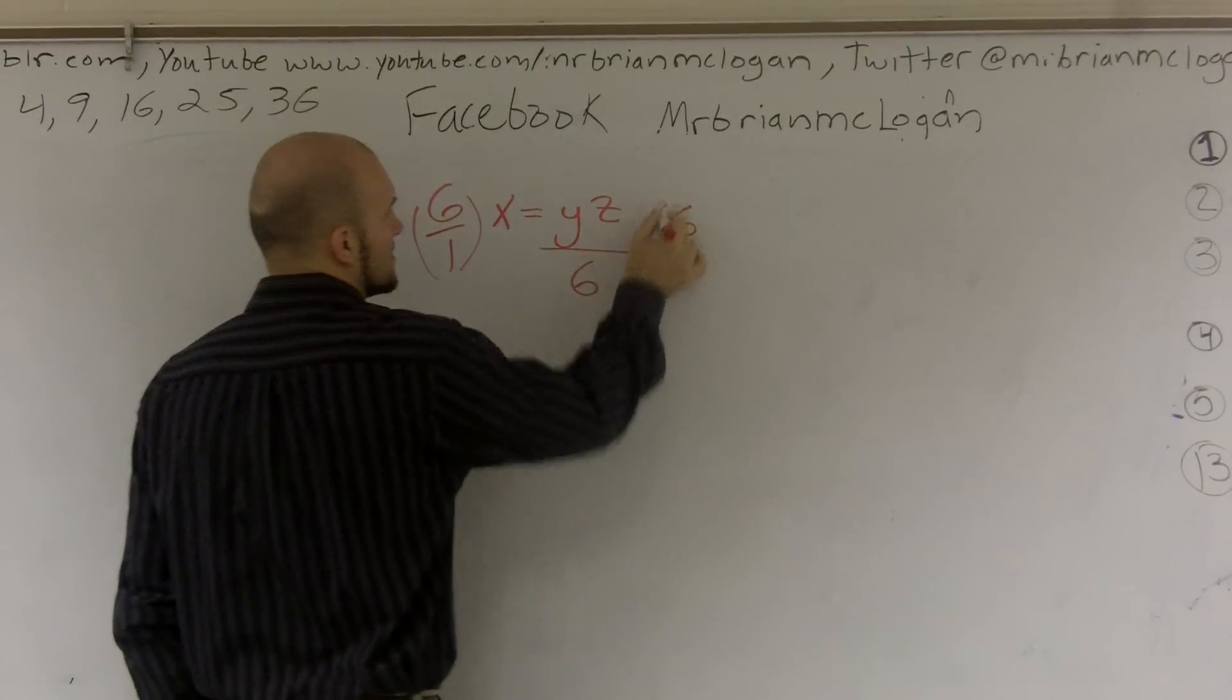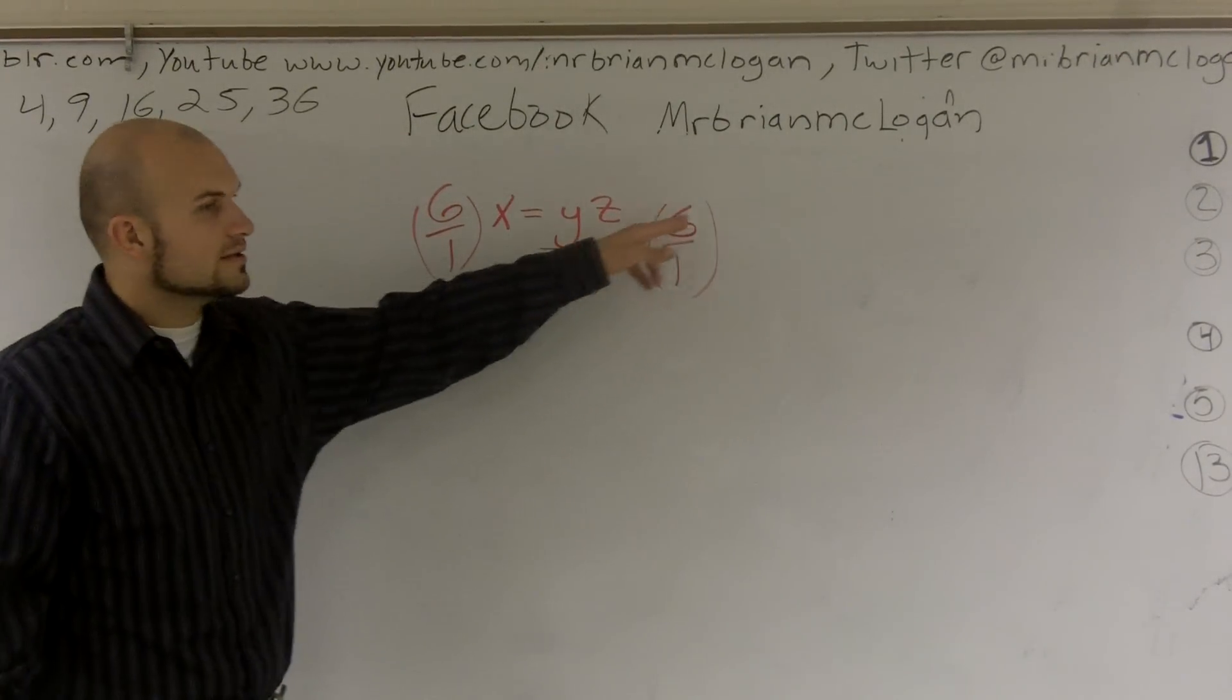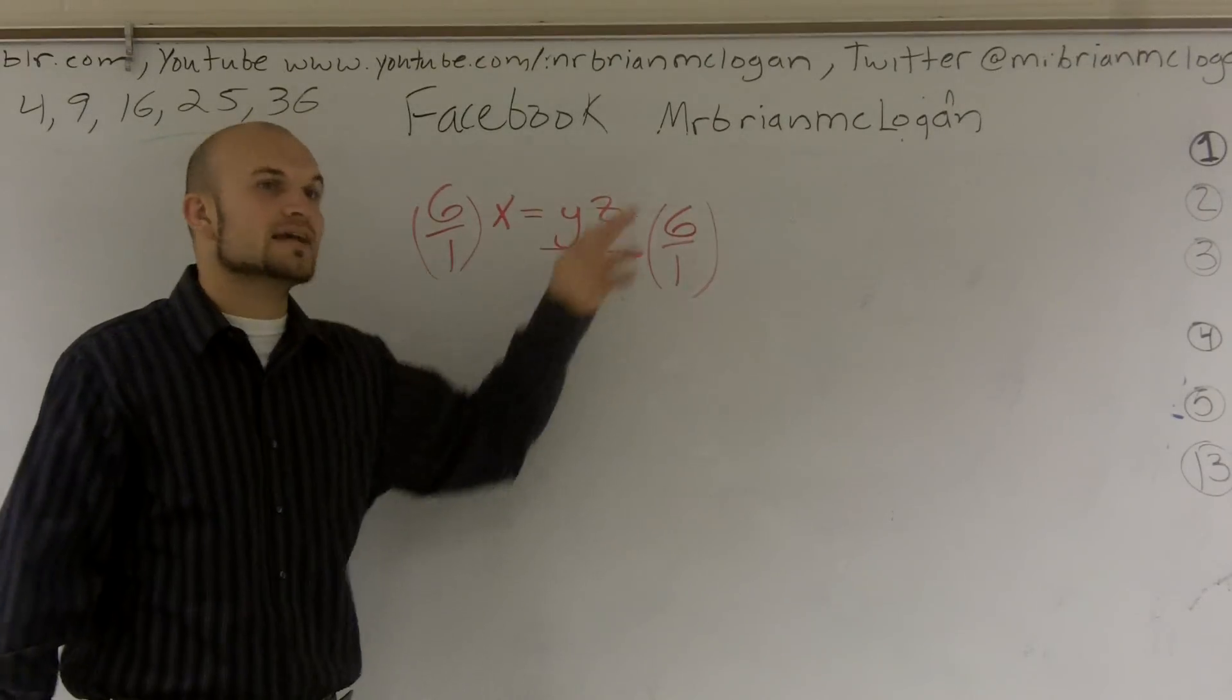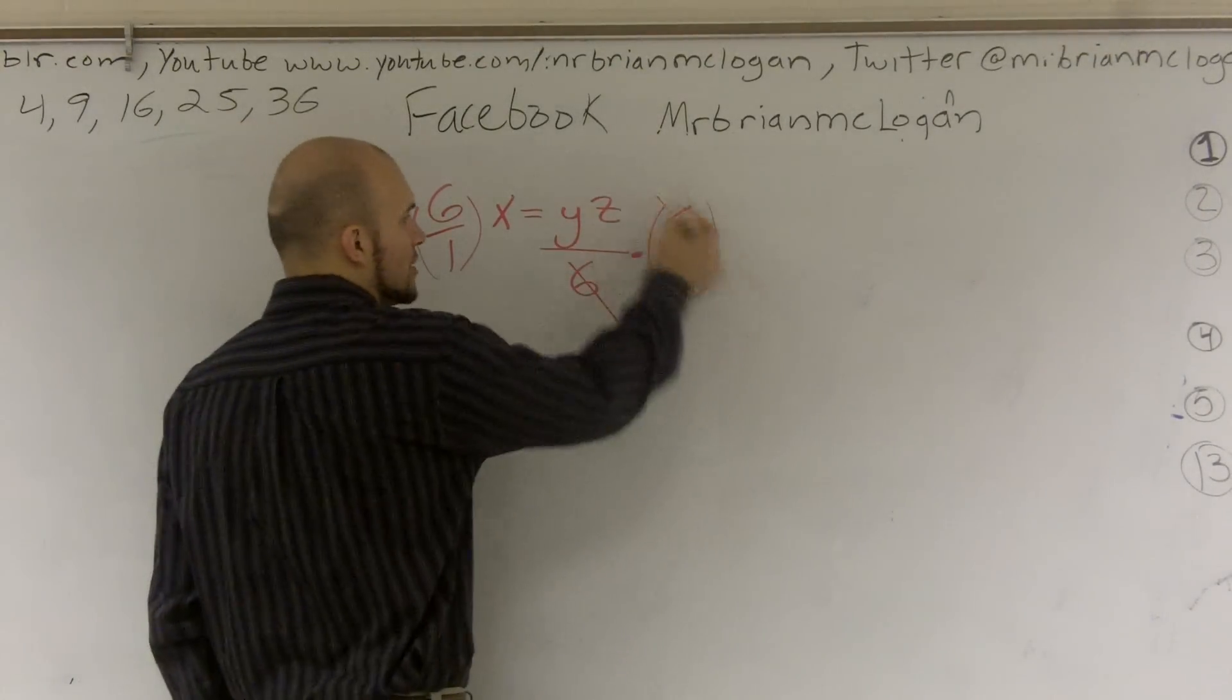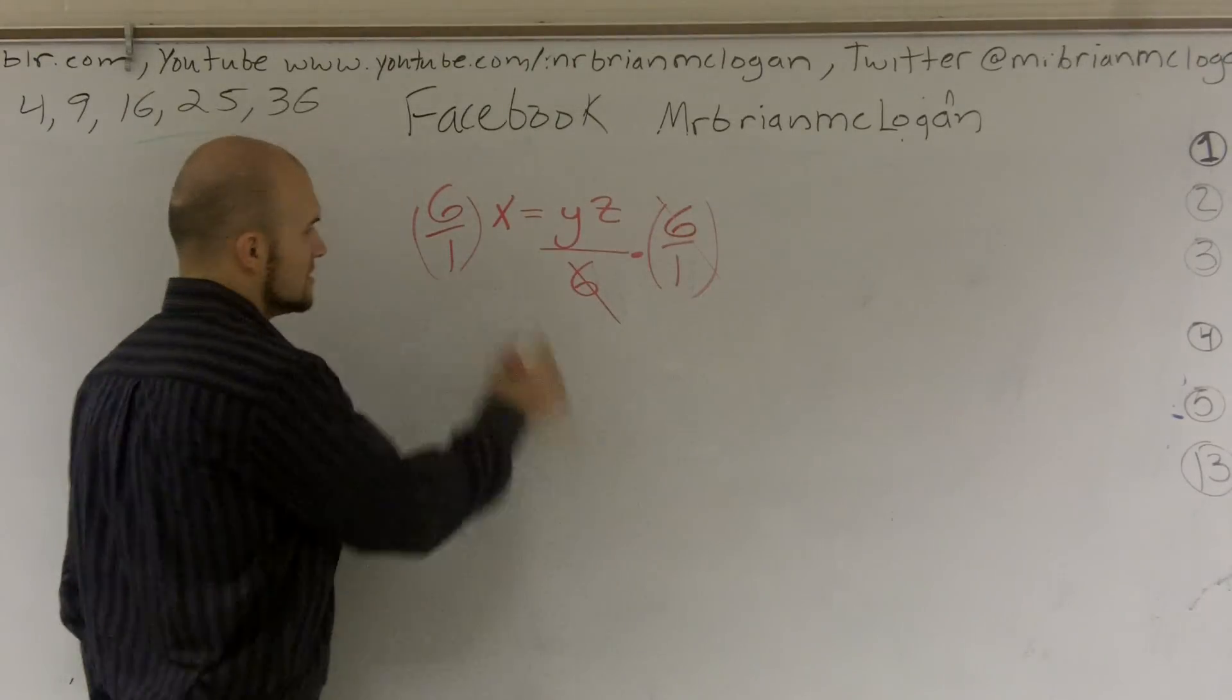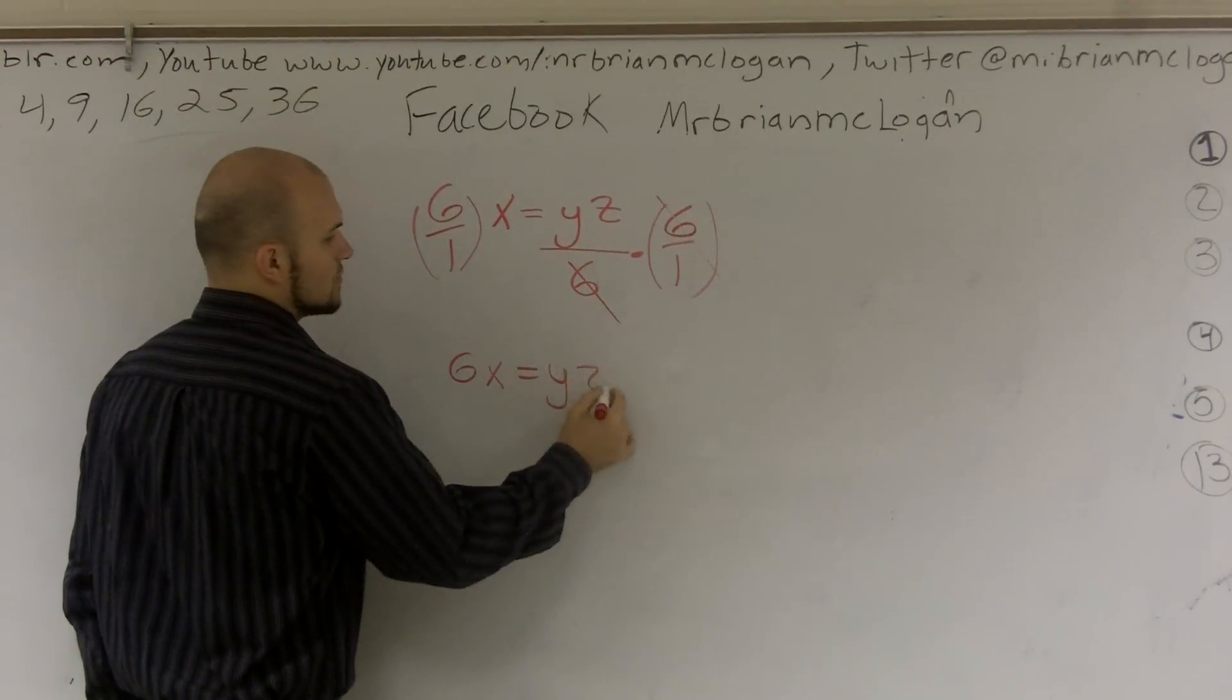And I'm going to multiply by 6 over 1 because 6 over 1 is still equal to 6, but it's a fraction. Therefore, now when I divide and multiply, that cancels out to give me 1. So I no longer have a 6 on the right side. So now I'm just left with 6x equals yz.